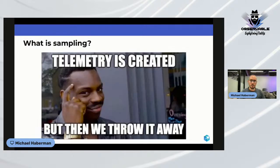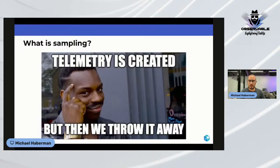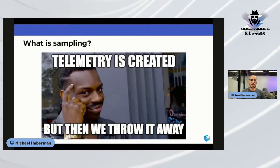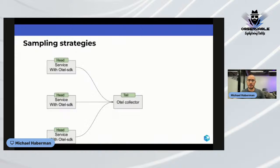The focus today is distributed tracing. The simple solution: don't take 100% of all generated data. Look at the data and decide if it's interesting; throw away what isn't. Even simpler: take only 5% or 10% of traces. That would dramatically reduce cost. The question is whether that's a good enough approach, and what other options exist.